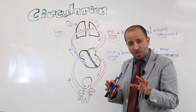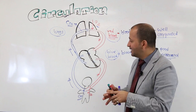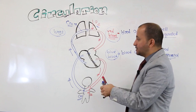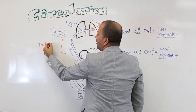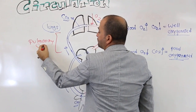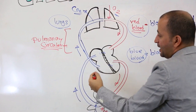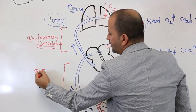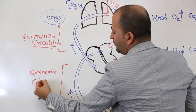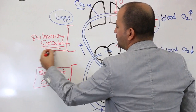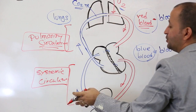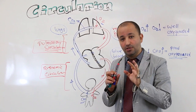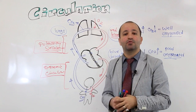Just one more point to add: this section of the circulation — the connection of the heart to the lungs — is called pulmonary circulation, where pulmonary means lungs. The part where the heart connects to the body is called systemic circulation. So technically the cardiovascular system has two parts: pulmonary circulation and systemic circulation. I will explain the heart in detail and how this pumping system works shortly.